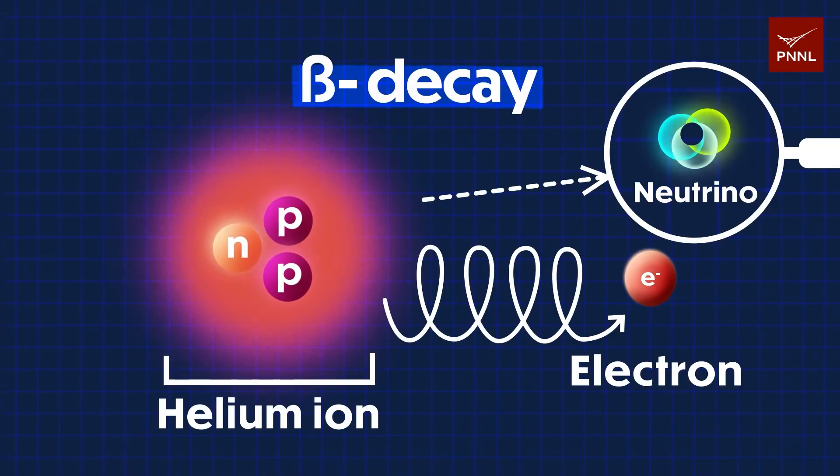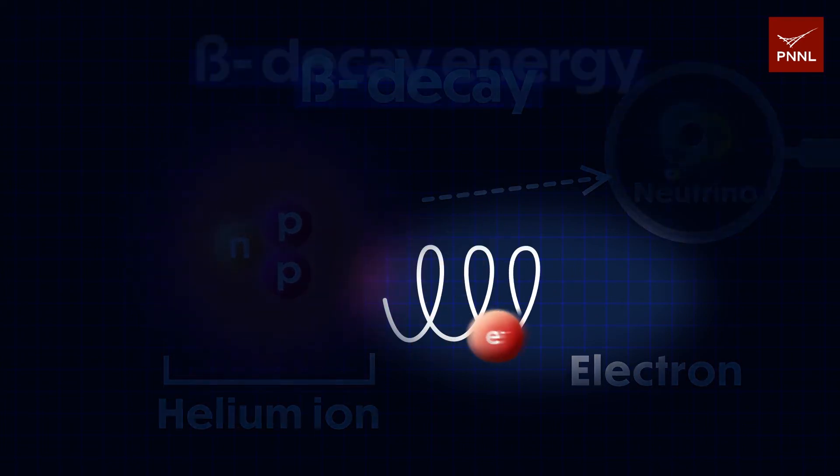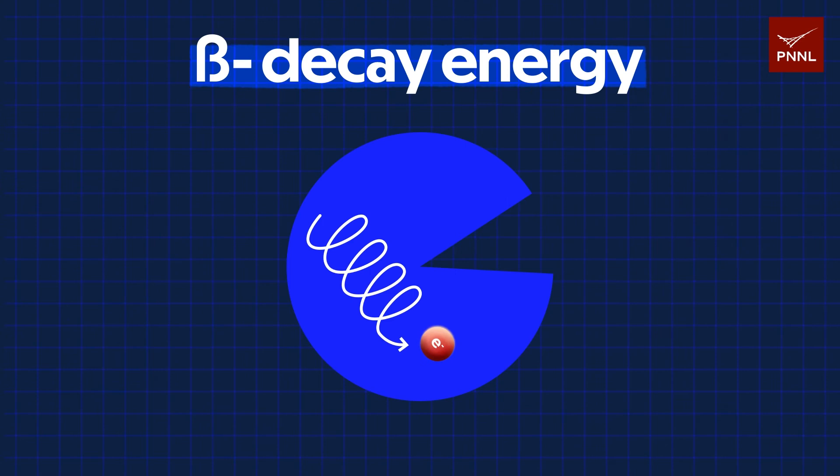CRESS captures the microwave radiation emitted from newborn electrons as they spiral around a magnetic field. The electrons carry most, but not all, of the energy generated from this beta decay event. It's this missing energy the team is after.